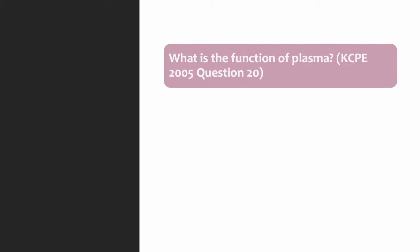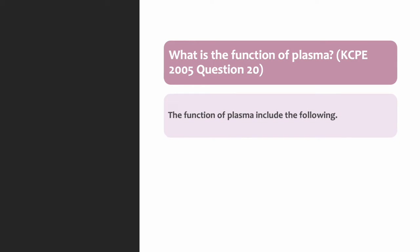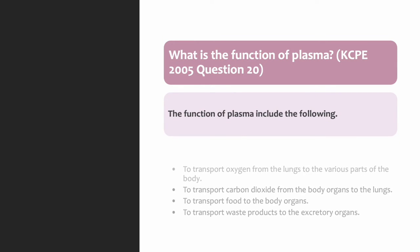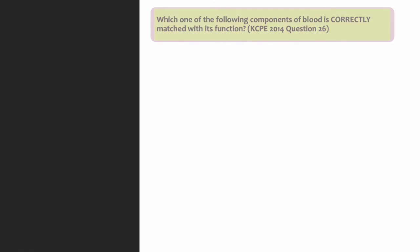What is the function of plasma? The functions of plasma include: one, to transport oxygen from the lungs to the various parts of the body; two, to transport carbon dioxide from the body organs to the lungs; three, to transport food to the body organs; and four, to transport waste products to the excretory organs.